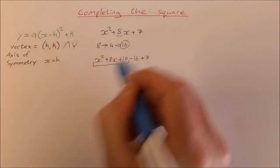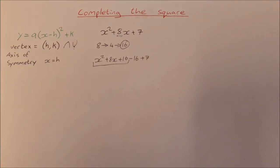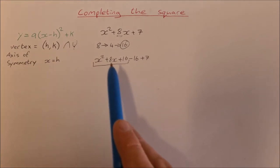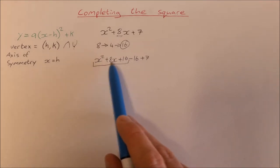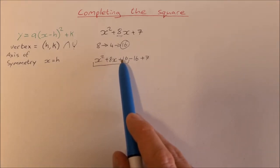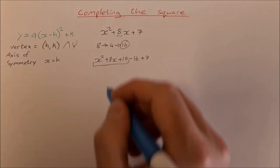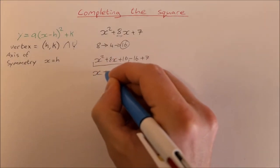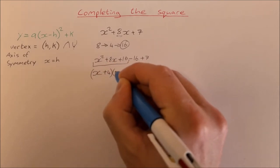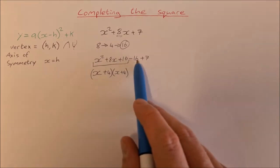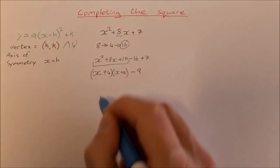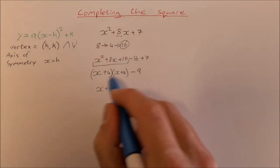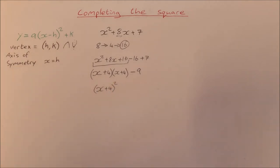What we do is then take the new quadratic trinomial that we have here and we can factorize this. We're looking at factors of 16 that add together to give you 8. Well, 4 by 4 is 16 and 4 plus 4 is 8, so we write it as (x + 4)(x + 4). Then we have minus 16 and plus 7 which equals minus 9. One final step: (x + 4)², and that is completed square form: (x + 4)² - 9.